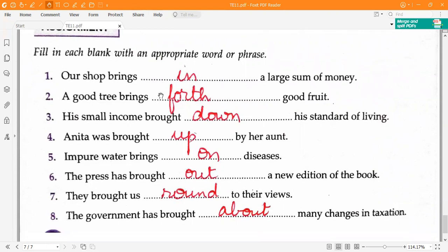Second one, a good tree brings forth good fruit. Third one, his small income brought down his standard of living. Fourth, Anita was brought up by her aunt.